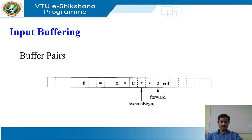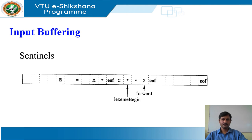Advancing the FOD pointer requires that we first test whether we have reached the end of one of the buffers, and if so, we must reload the other buffer from the input and move forward to the beginning of the newly loaded buffer. If we use the scheme as previously described, we must check each time we advance the FOD pointer that we have not moved off one of the buffers. If we do, then we must also reload the other buffer. So for each character read, we make two tests.